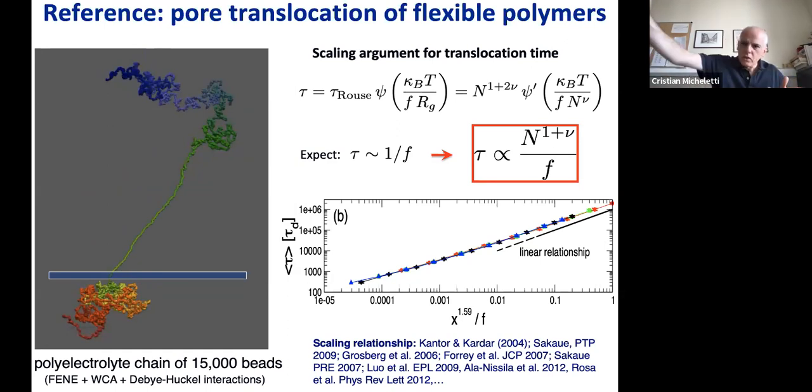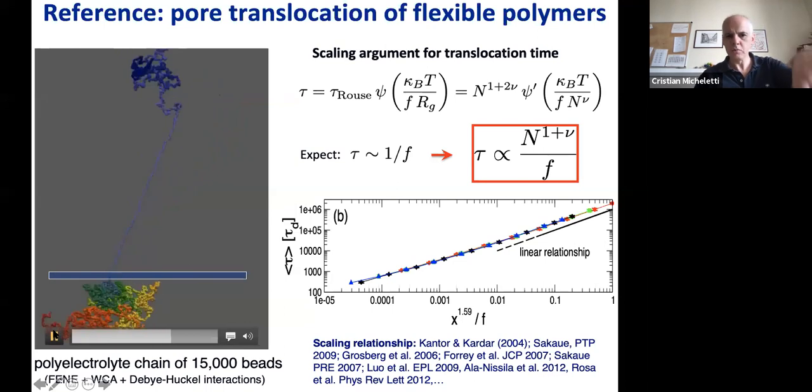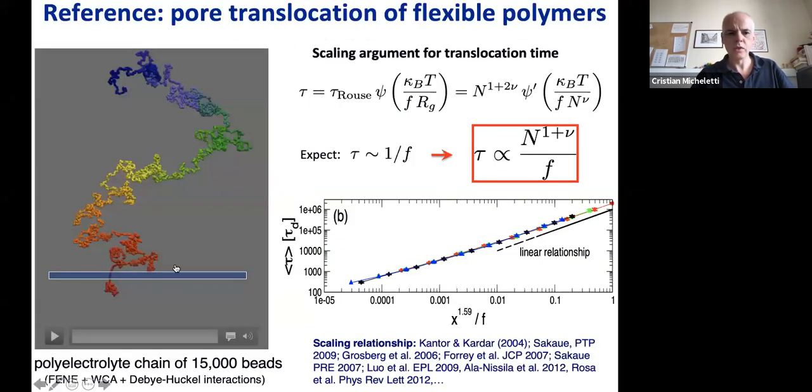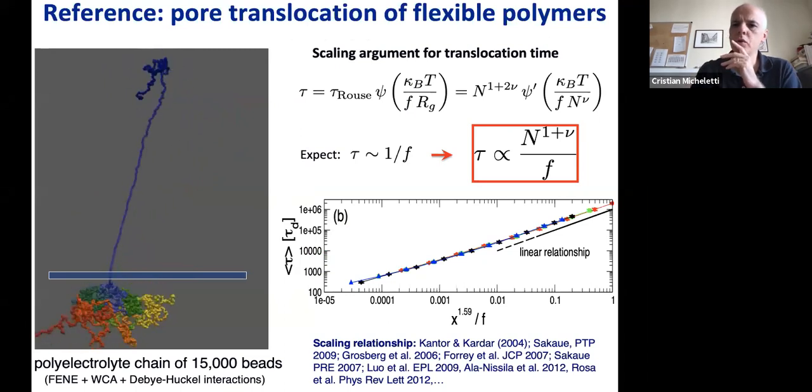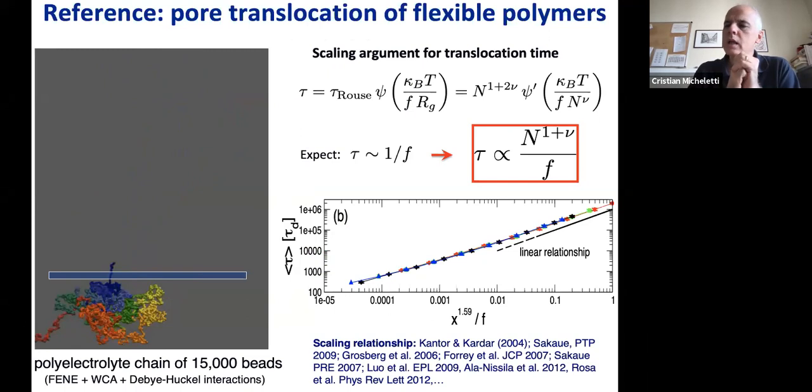Naively, you might expect that if you take a chain twice as long, you require twice as much time to translocate it. No, it's not the case. You require much more than that. It is a process that slows progressively down. This is because you're propagating your tension front across a chain that is embedded like a fractal in three-dimensional space.